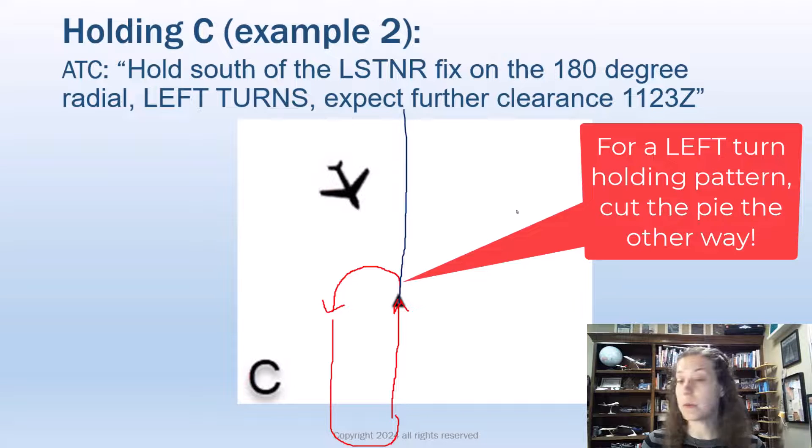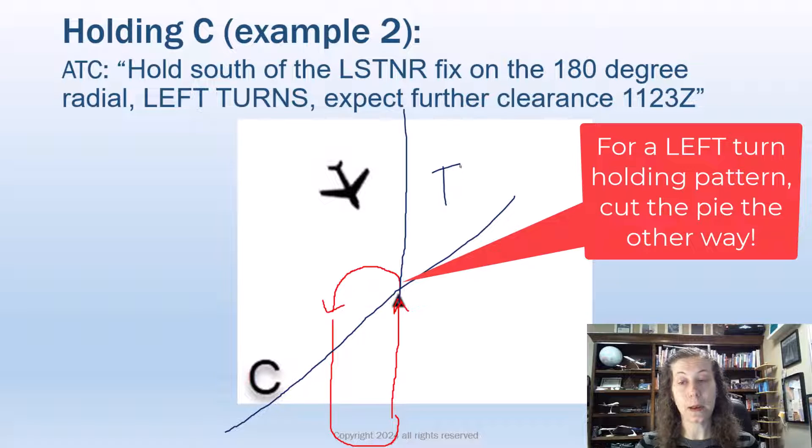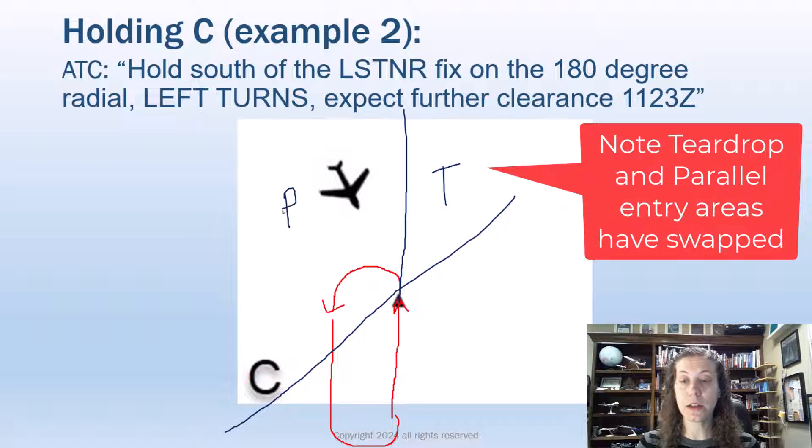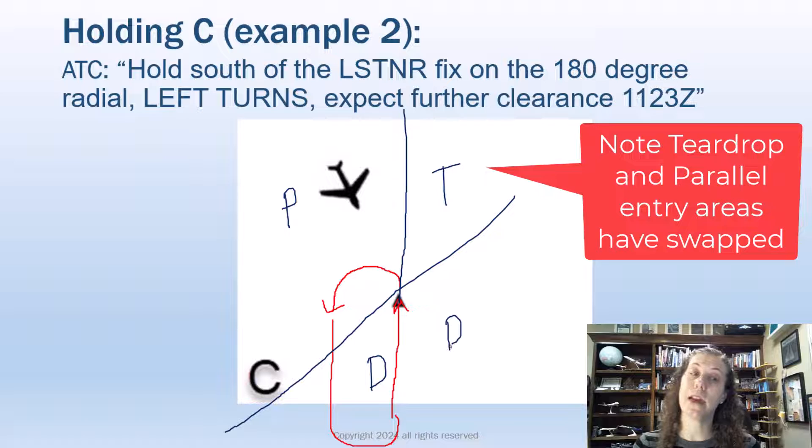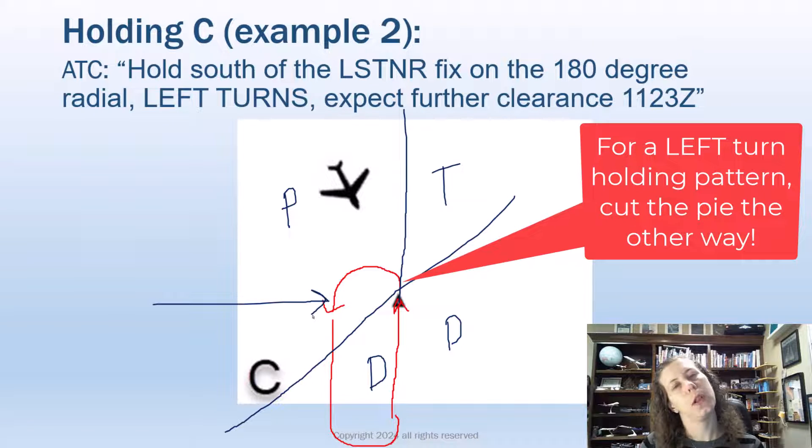We can't draw it where we used to be, where we have been drawing it. We actually have to draw it again so we cut the holding pattern appropriately. But now you will notice teardrop is on the opposite side, and parallel is over here on opposite side, and direct is down there. So if we are doing a left-turn holding pattern, we flip how we're cutting it. But notice I'm still cutting like the same type of angle through the middle of the holding pattern. So hopefully that's helpful to you.